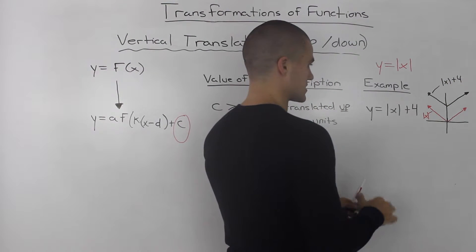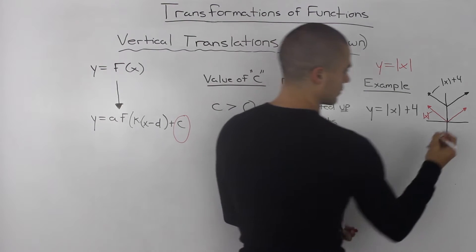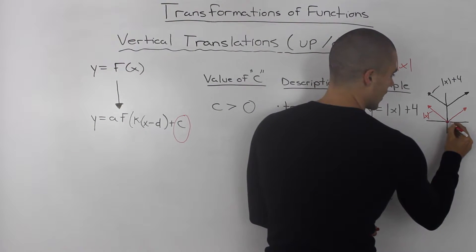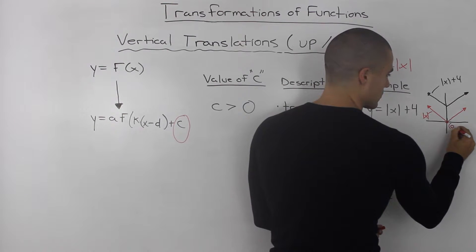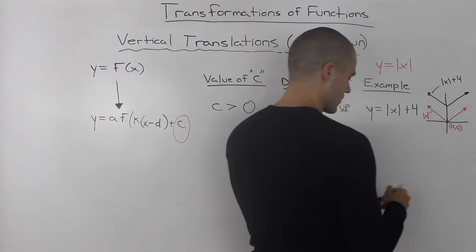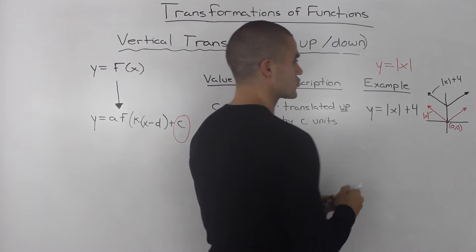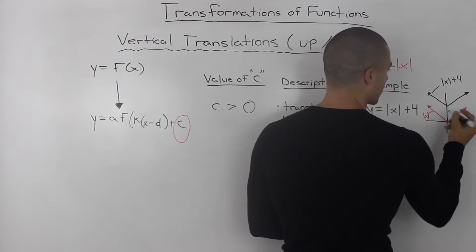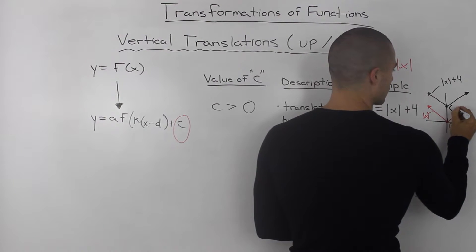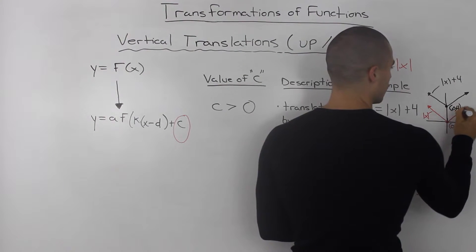If you notice, our parent function has this cusp or vertex at zero and zero. If we translate this function up by 4 units, then our transformed function would have a vertex at zero and four.